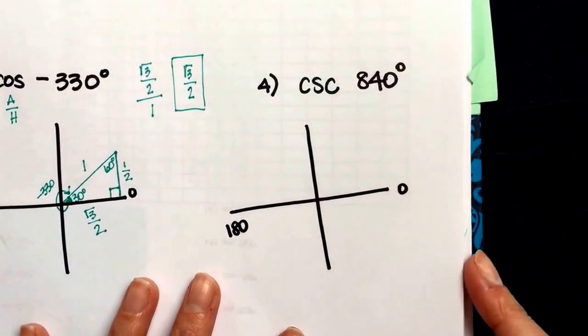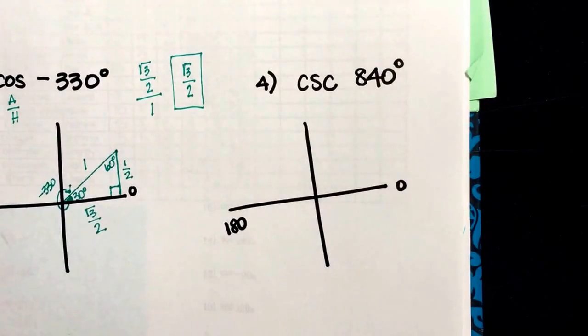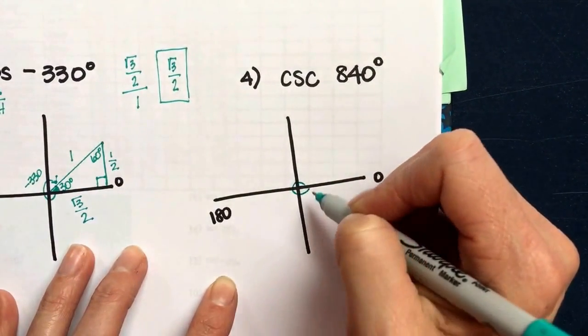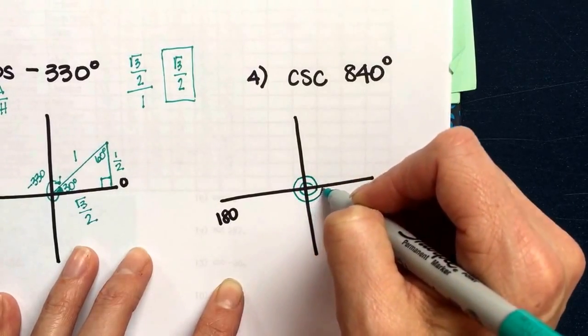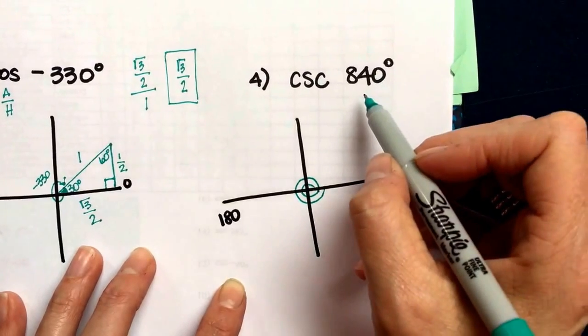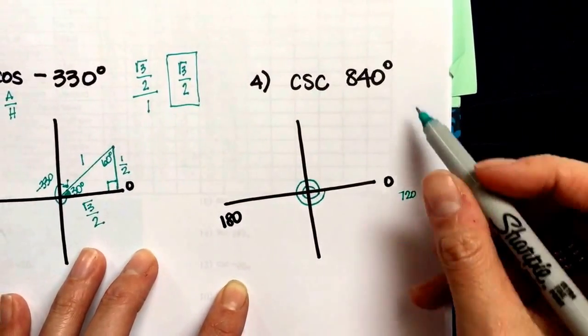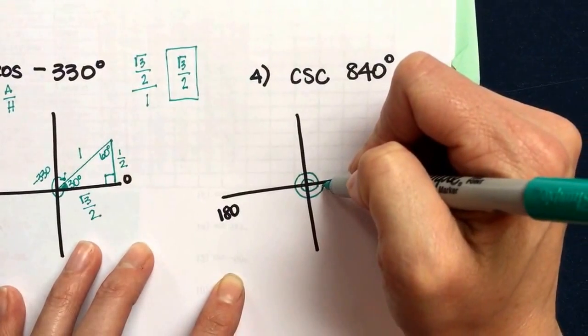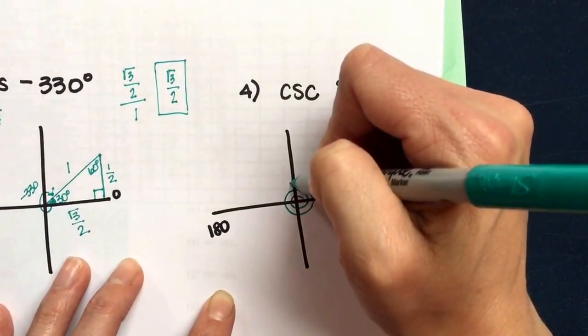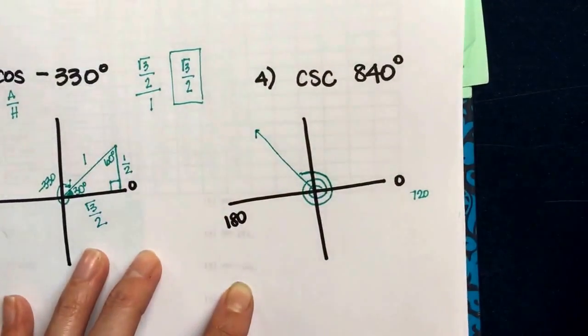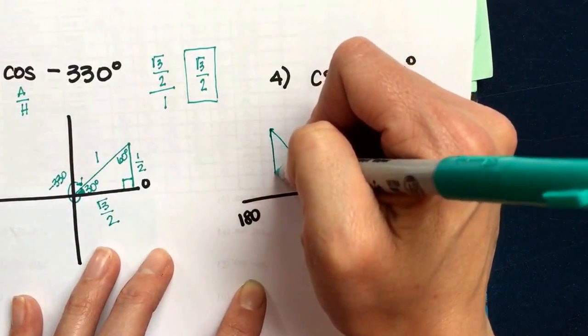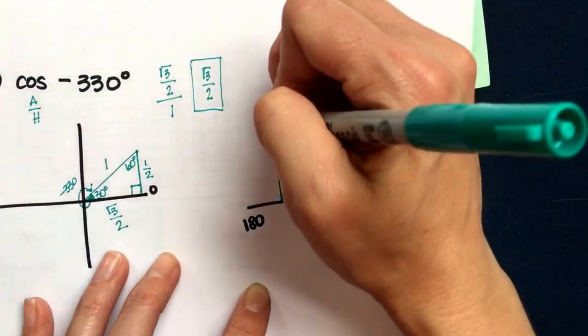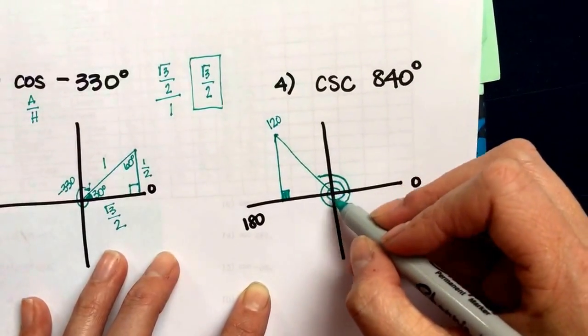And number 4, the last one, to show you that they are not all in the first quadrant. That was a fluke that those first three all ended in the first quadrant. I should have paid more attention to that. 840. So if I go all the way around once, that's 360. If I go all the way around a second time, that's another 360, which makes 720. So if I'm at 720 right now, and I want to graph 840, how much further do I need to go? 840 minus 720 is another 120. So there's 90, 120 would be like right there. So there's my angle. I'm in the second quadrant this time. Draw your side to the x-axis to make a right triangle.